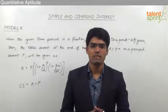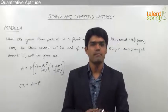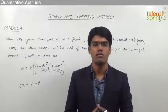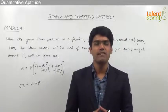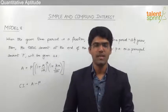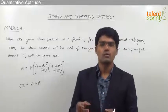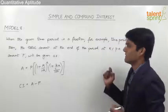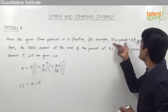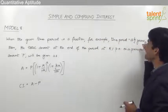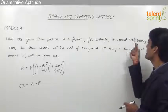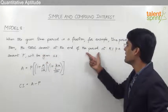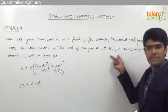Let us now take the next module from simple and compound interest, where we are supposed to find out the total compound interest or the total amount for a given time period which is in terms of a fraction. Let us first understand the formula to be used to solve such questions when the given time period is a fraction. For example, the time period is equal to a b/c years, where a is an integer and b/c is a fraction.